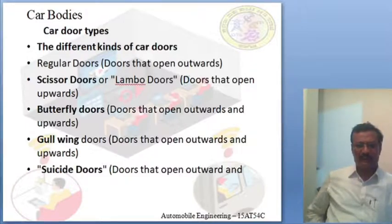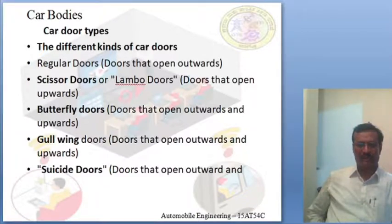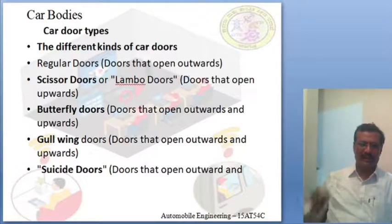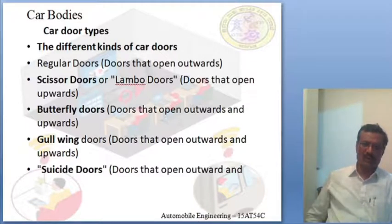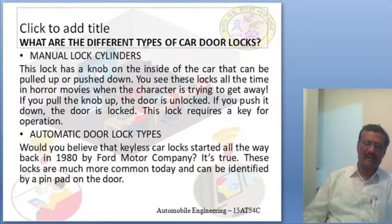There are a few types of car body doors. One is a regular door that opens outward. Scissor doors, also called lambo doors, open upward. Butterfly-type doors open outward and upward. Gull-wing doors also open outward and upwards.